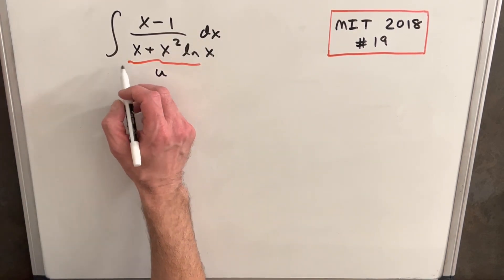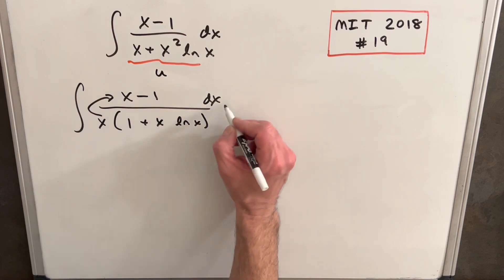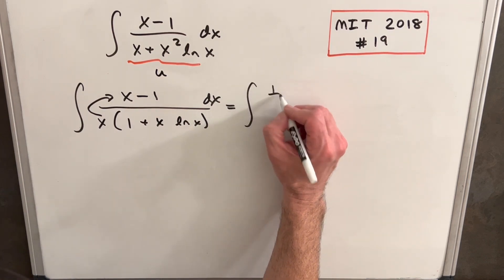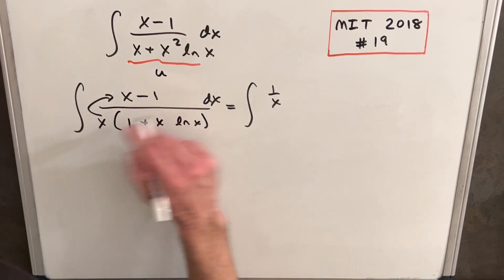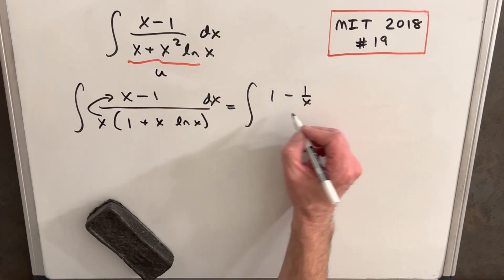So my first thought was let's factor out an x and see what happens. With that factored, what we can do is divide our x into the numerator, and we're going to have in our numerator 1 minus 1/x.